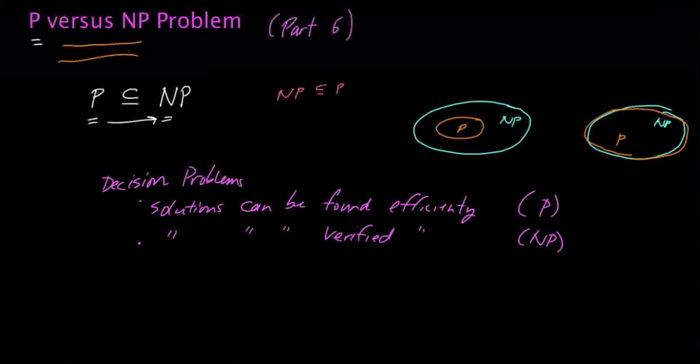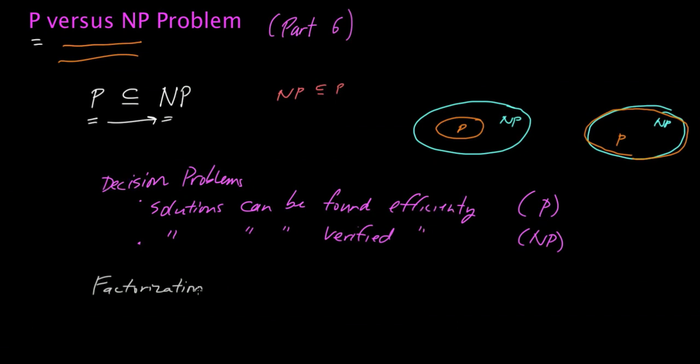And one example that we talked about, and this is a non-decision problem, was the factorization problem. There was a case where we were able to verify the solution by simply multiplying. It's very easy to verify that two numbers comprise non-trivial factors or constituents of a broader number. It's easy to verify that by taking the product of those two numbers. But given the number that's already the product, it's hard to come up with the constituent factors on your own, or at least there's no known easy way to do that.